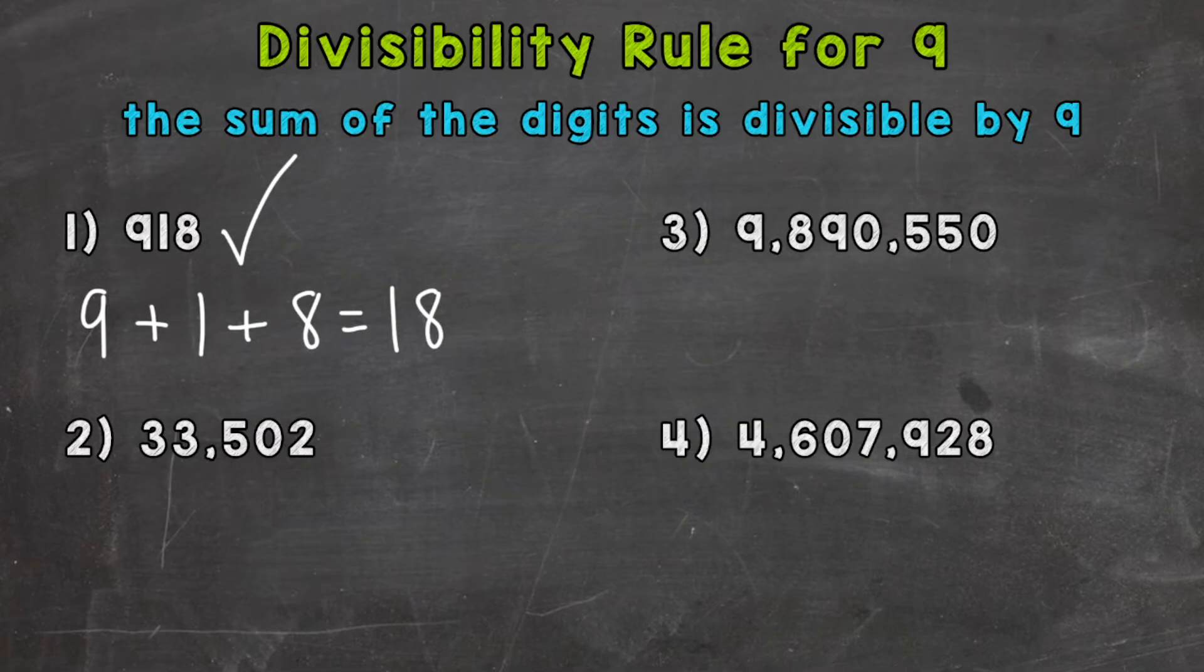So on to number 2, where we have 33,502. Let's find the sum of the digits and we'll go from there. So 3 plus 3 plus 5 plus 2.